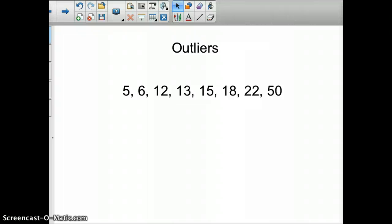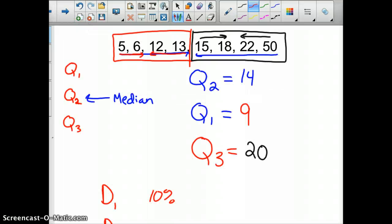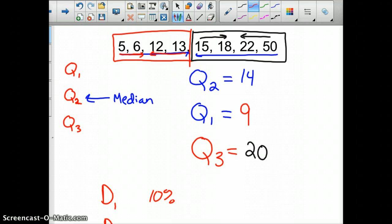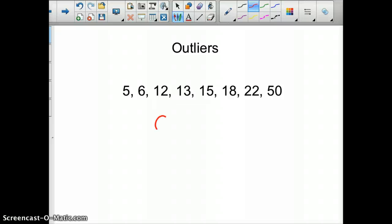Finally, we want to calculate outliers. We already broke this data into quartiles, because you need to do that to find outliers. Quartile 1 is 9, and quartile 3 is 20. That's kind of the important ones.